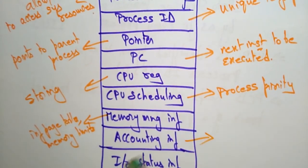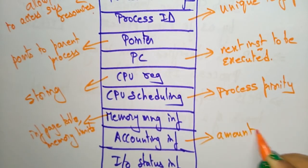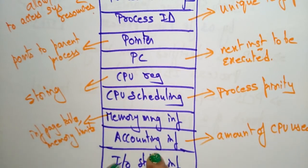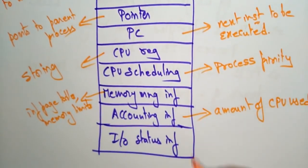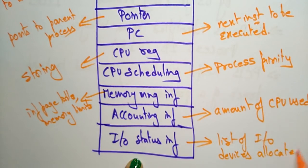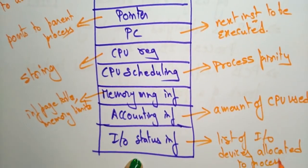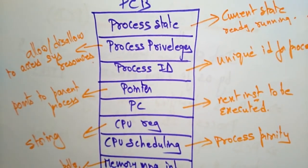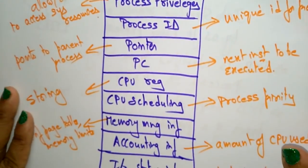Accounting information includes the amount of CPU used for process execution, time limits, execution ID, etc. I/O status information includes the list of I/O devices allocated to the process. This is what the Process Control Block stores about each process that is going to be executed. Thank you.